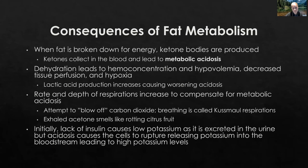Let's talk about the consequences of fat metabolism. There are some really significant consequences of the body breaking down fat for energy. When fat is broken down for energy, ketone bodies are produced and ketones are going to collect in the blood. Initially they're going to spill out into the urine; however, at some point there's going to be so many of them that they will accumulate in the blood. This is called ketoneemia, and unfortunately this ketoneemia is going to disrupt our acid-base balance, resulting in metabolic acidosis.